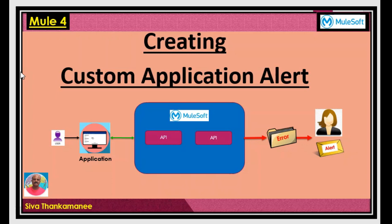We are going to take a use case where we receive an order, try to process it, and insert it into the database. While inserting, we are going to simulate some error so that the order doesn't get inserted. In such a situation, the order has failed due to a database communication error. We are going to capture that error and raise a custom application alert in the API via the CloudHub alert feature.